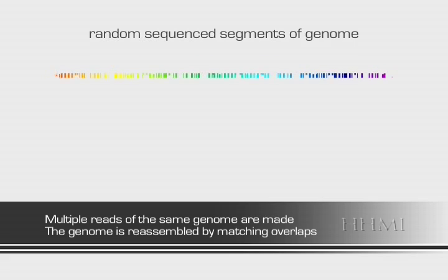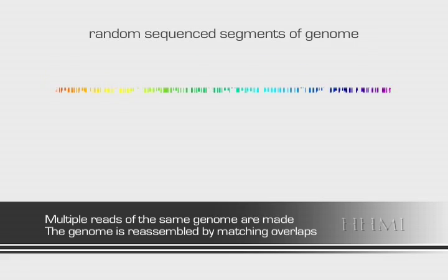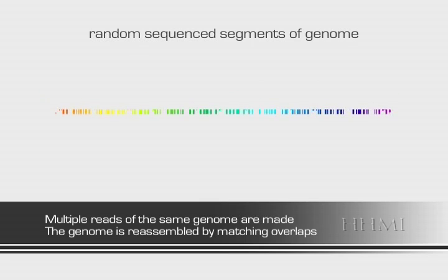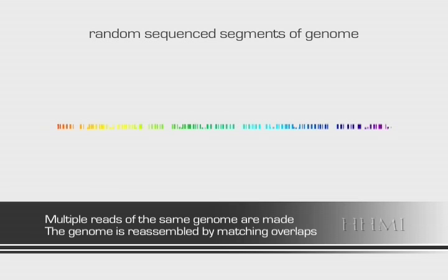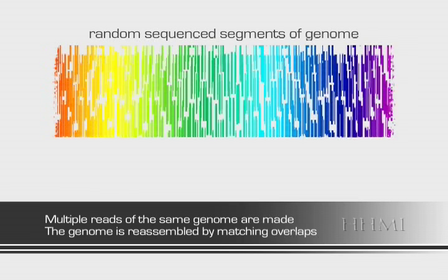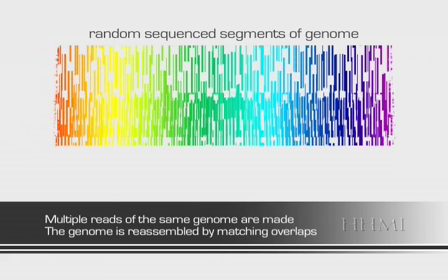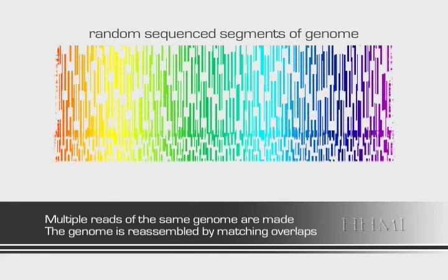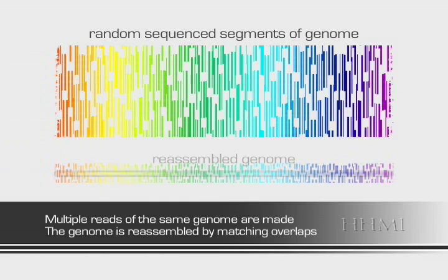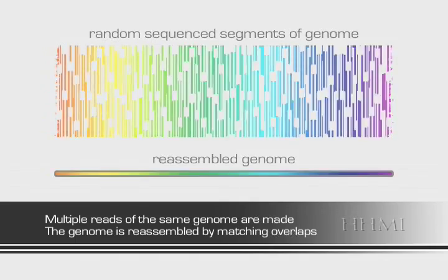In order to construct a complete genome, we need to take many more samples of the same genome from different cells and create a library. As we sequence progressively more samples, we can start to assemble the genome by finding overlapping portions of the sequence among different segment sequences. Computer programs look for matching sequences of nucleotides and attempt to match them together. This process generally yields the majority of the genome.